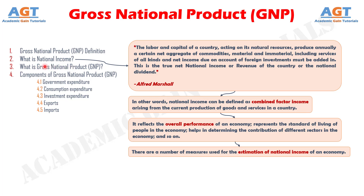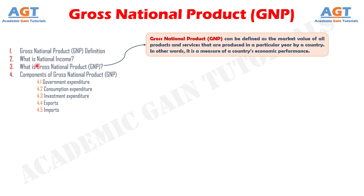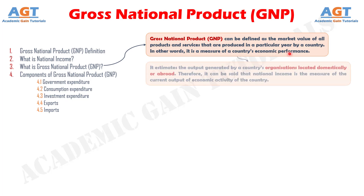Let us understand the concept of GNP in detail. Gross National Product, GNP, can be defined as the market value of all products and services that are produced in a particular year by a country. In other words, it is a measure of a country's economic performance. It estimates the output generated by a country's organizations located domestically or abroad.